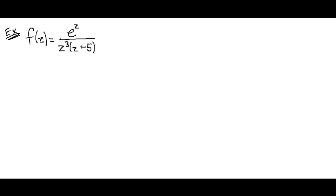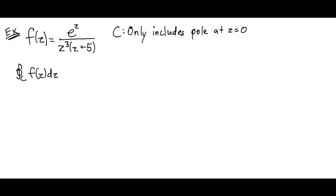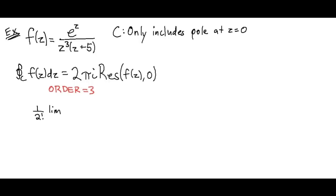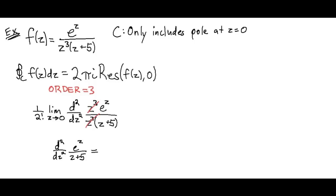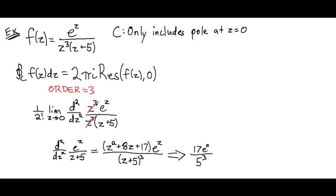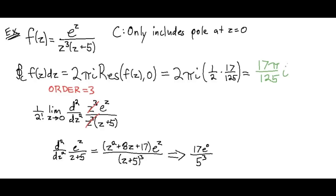This one will be a little more complicated. Our function is e^z / (z³(z + 5)). We're going to limit our curve C to only include the pole at z = 0. We take the residue of the function at z = 0, which is a pole of order 3. That's 1 / 2! times the limit as z → 0 of the second derivative of our function times z³. We use the quotient rule to find the second derivative of our leftover function, and it comes out to (z² + 8z + 17)e^z / (z + 5)³. When taken at z = 0, you end up with 17 × 1 / 5³ = 17/125. Don't forget to multiply this by 1/2!. Our result is that the integral comes out to 2πi × (1/2)(17/125), which is 17πi/125.